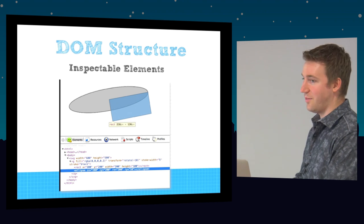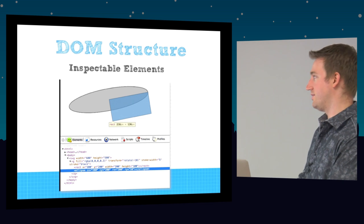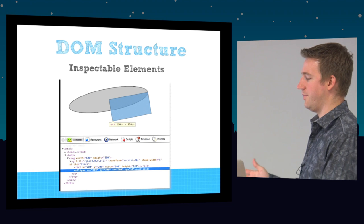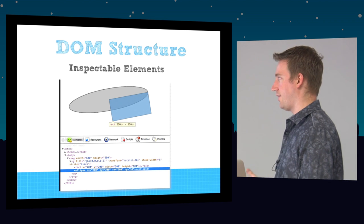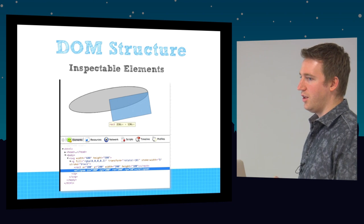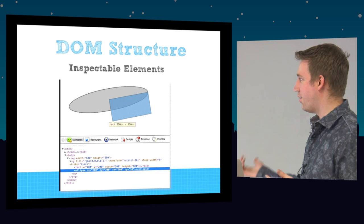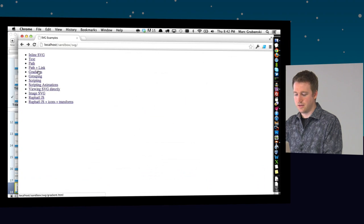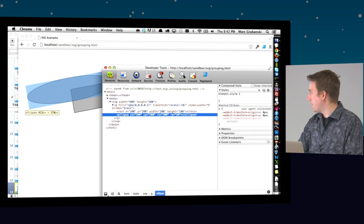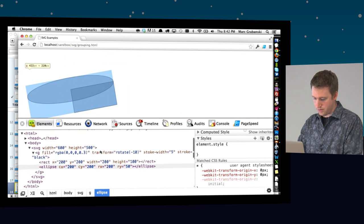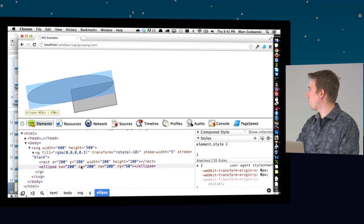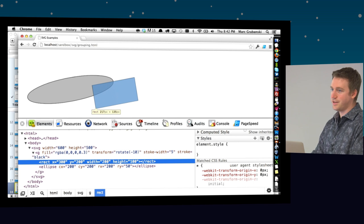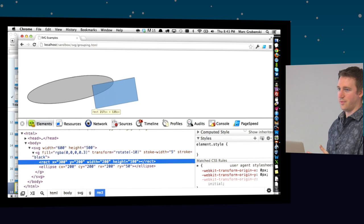This is what separates SVG from Canvas in my mind. With SVG it's just a DOM structure — just like HTML. So I can go in and inspect SVG elements just like you would HTML. I'll show you this in action. You can see it's just like normal HTML — I'm clicking on elements and I can change properties. You just don't get this with Canvas because Canvas pipes everything out to a bitmap.